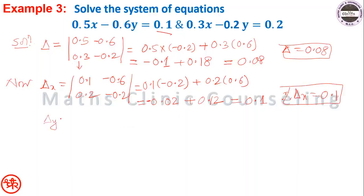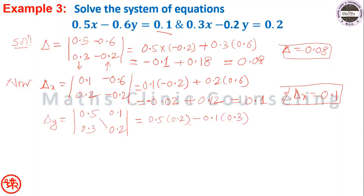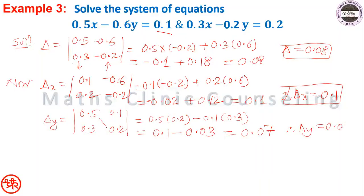Delta_y: replace y-coefficients with constants, keeping x-coefficients 0.5 and 0.3. So delta_y equals the determinant [0.5, 0.1; 0.3, 0.2], which is 0.5·0.2 minus 0.1·0.3, equal to 0.10 minus 0.03, equal to 0.07. Therefore delta_y equals 0.07.